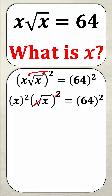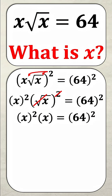Now the square root and the power of 2 are actually inverses, so they'll cancel each other out. That leaves me with x squared times x, which is equal to 64 squared. Now x squared is just x times x, so x times x times x is just x to the power of 3.